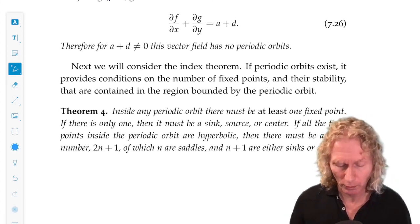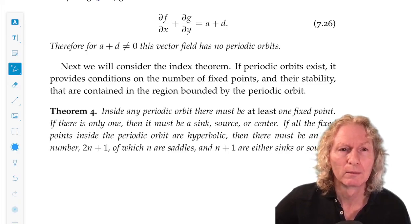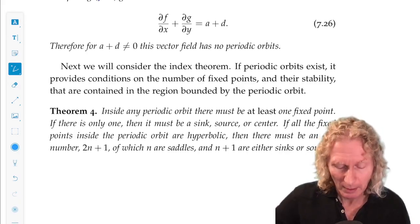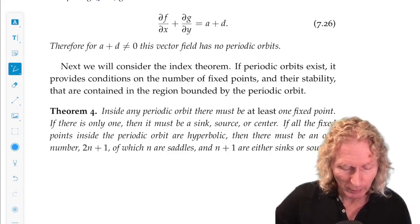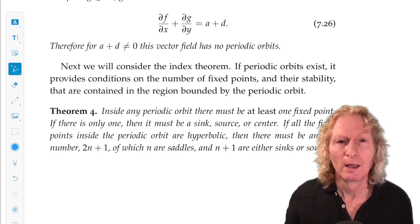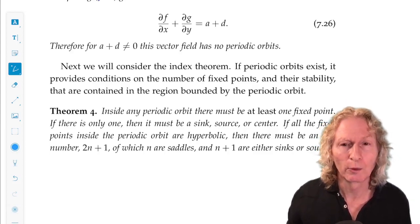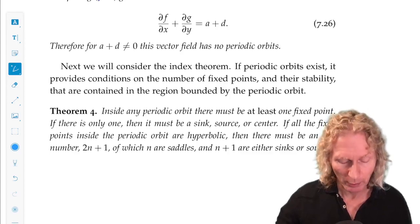Now what does this do for us? Well if we have a periodic orbit, Bendixson's theorem rules them out. If we have a periodic orbit it provides conditions on the number of fixed points or equilibrium points and their stability type that are contained within the region and bounded by that periodic orbit.